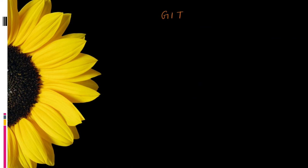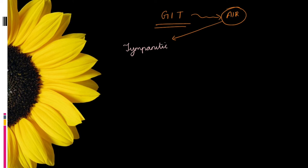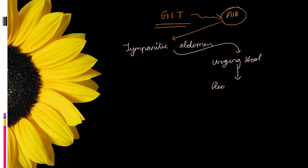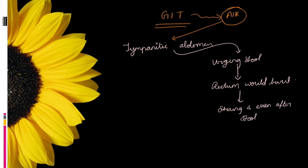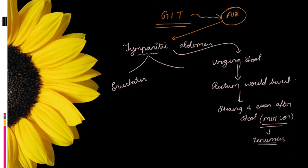In the GIT, remember it as completely filled with air — tympanic. Because of fullness and heaviness, Babu has urging to pass stool, and during straining he feels as if the rectum would burst. He has straining and urging even after stool. Agaricus can be compared here with Mercurius Corrosivus, which has more tenesmus. Due to tympanitic abdomen, he must expel air either through eructation or flatulence.